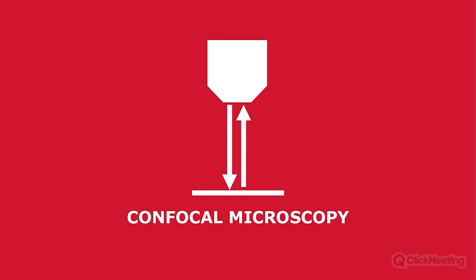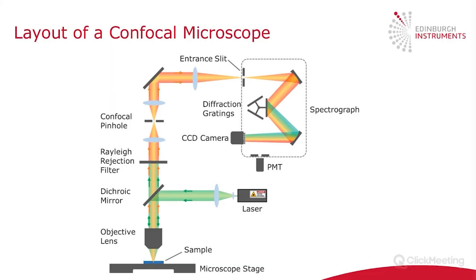So what is confocal microscopy? Here is a simplified layout of how a confocal microscope works for both photoluminescence and Raman. Starting with the excitation source, which is nearly always a laser. The laser comes in, it's reflected off a dichroic mirror and down towards the objective lens. This focuses the beam onto the sample to a point that excites the sample at that point. The sample is placed on a microscope stage, which is nearly always motorized, allowing you to move the point where the laser hits the surface.